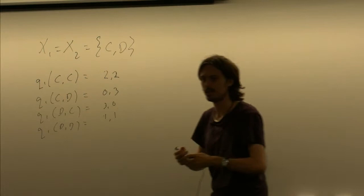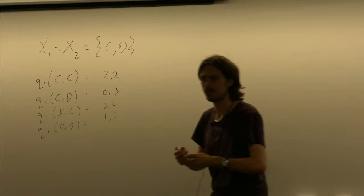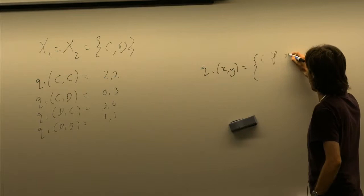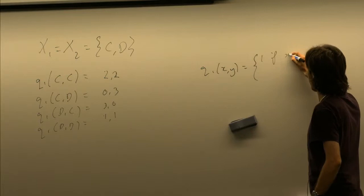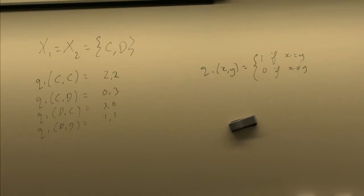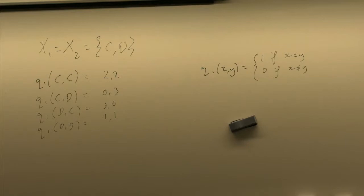This is a game with a unique Nash equilibrium. I could also set up matching pennies, where the payoff is one if X equals Y and zero if X does not equal Y, and player two's payoff is the opposite. Player one and two simultaneously call C or D. If they call the same thing, player one gets payoff; if they call different things, player two gets payoff. That's an example with no Nash equilibrium.